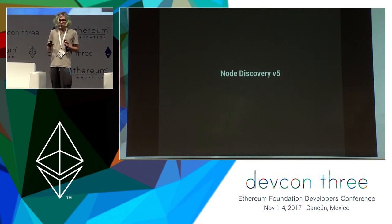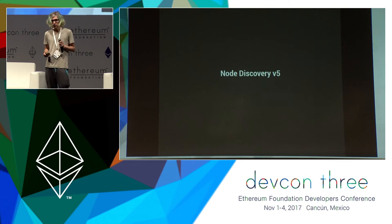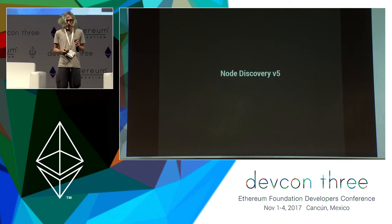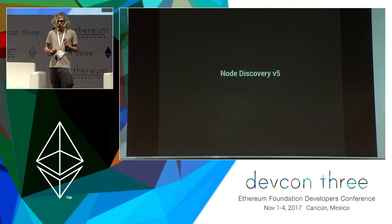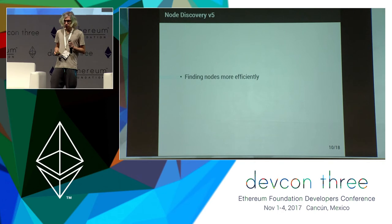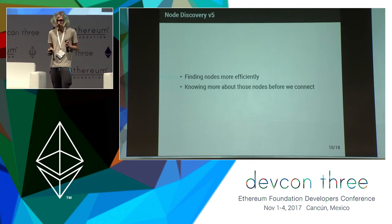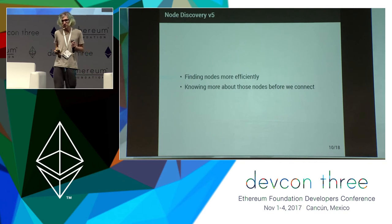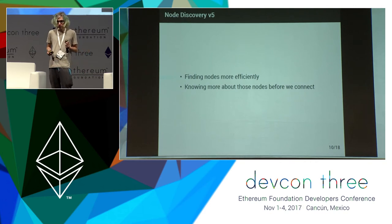Improving these things is the node discovery version 5 effort. With node discovery version 5 we want to achieve two things in particular: first, we'd rather be able to find nodes more efficiently, and second, we'd rather know more about those nodes before we even connect.